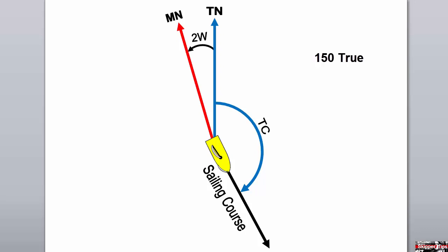The red line in the diagram now shows the direction of magnetic north. Label this magnetic north line MN as shown. Draw an arrow from the MN line to our sailing course line. Now we can compare the magnetic course to the true course.